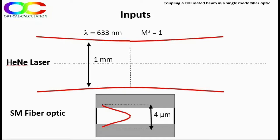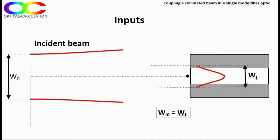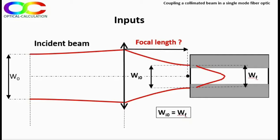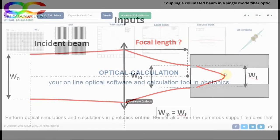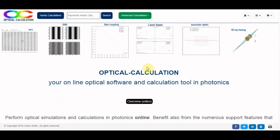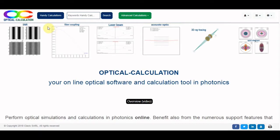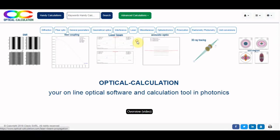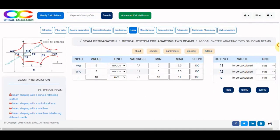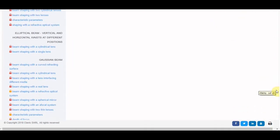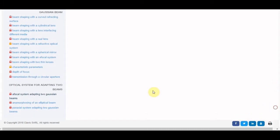The maximum coupling efficiency is achieved when the waist of the emerging beam is focused by the lens on the fiber entrance and when its diameter is equal to the fiber mode diameter. Let's start by the first step. Let's go in the laser and beam propagation topic of the handy calculations tool. In the section optical system for adapting two beams, the page paraxial system adapting two Gaussian beams will calculate the adequate focal length.